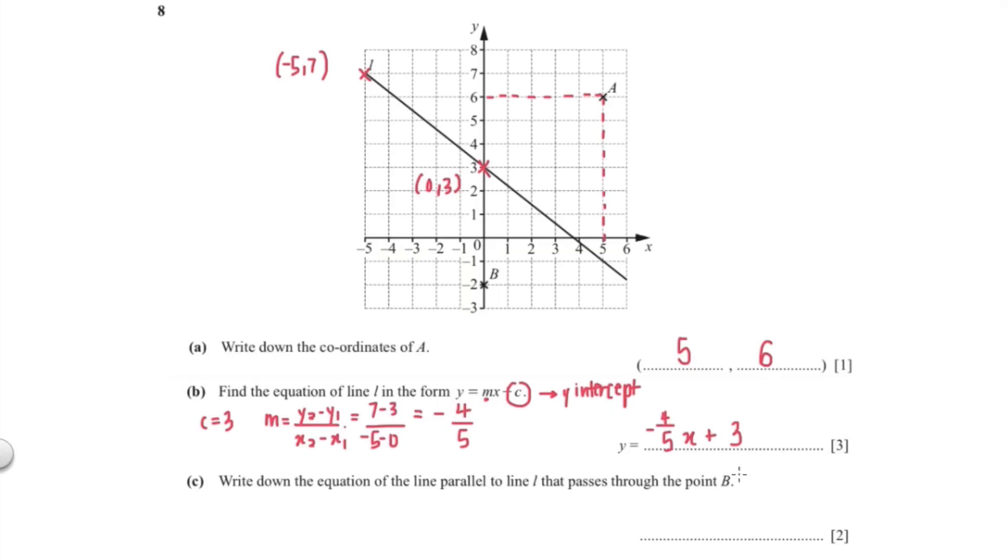Now write down the equation that is parallel to line A and passes through point B. So again, our gradient is negative 4 over 5 because the lines are parallel. The y-intercept is B which is negative 2. So the equation of our line is y equals negative 4 over 5x minus 2.